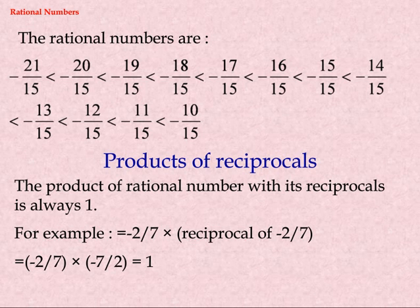Products of Reciprocals: The product of a rational number with its reciprocal is always 1. For example, minus 2 sevenths multiplied by the reciprocal of minus 2 sevenths equals minus 2 sevenths multiplied by minus 7 halves, which equals 1.